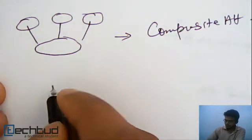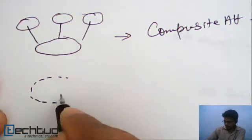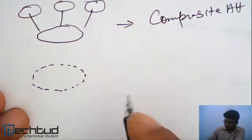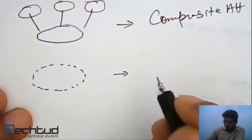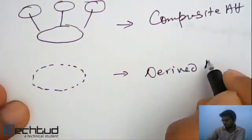Again, we have something represented by dashed ellipse. Okay. So, this is derived attribute. Derived attribute.